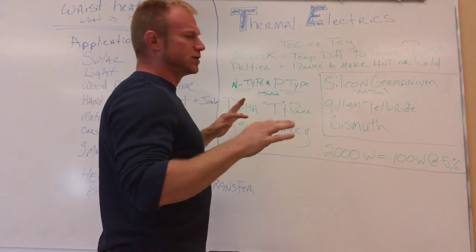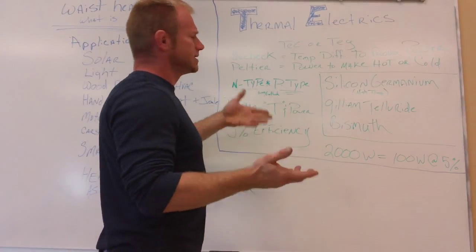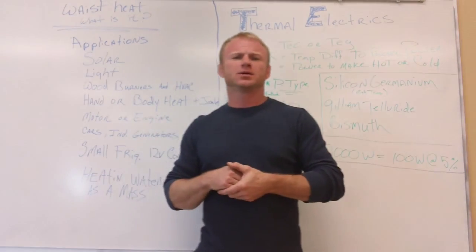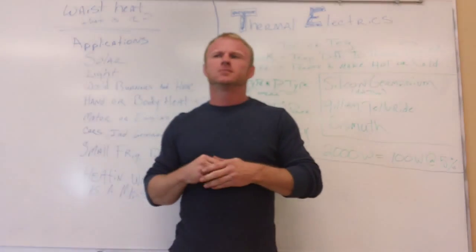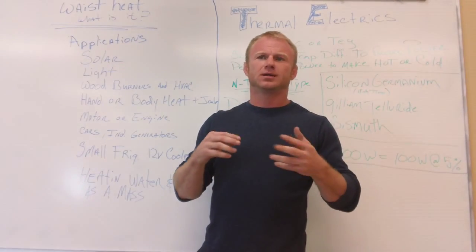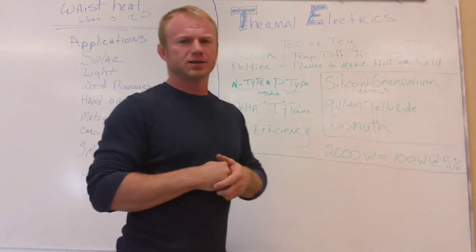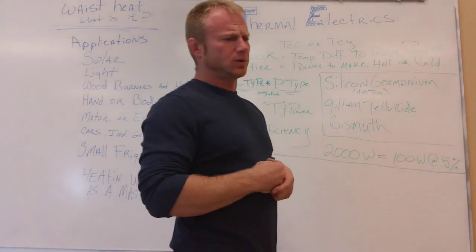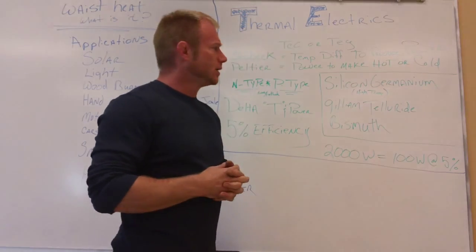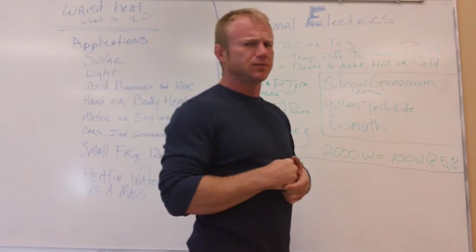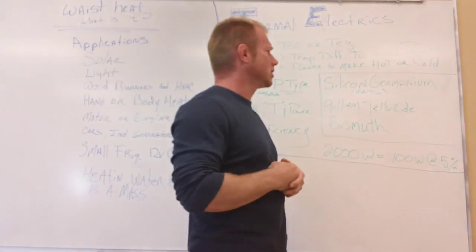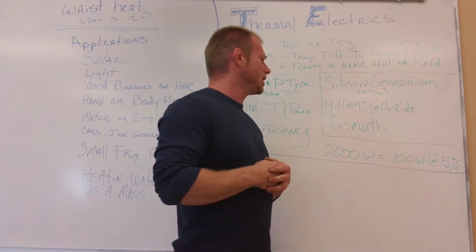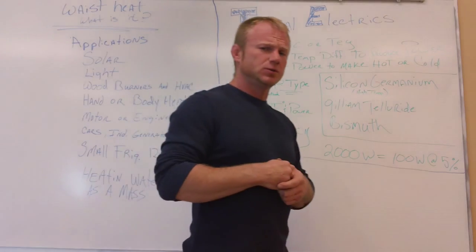There are two types of materials in there: an N-type and a P-type. If you know anything about batteries — there's an anode and a cathode in a battery — it's very similar in that you have two different polarities going on in there. Some of the materials used to produce these for high temperature difference applications are silicon and germanium. Some of the more exotic ones are gallium telluride; bismuth has been used for a long time.